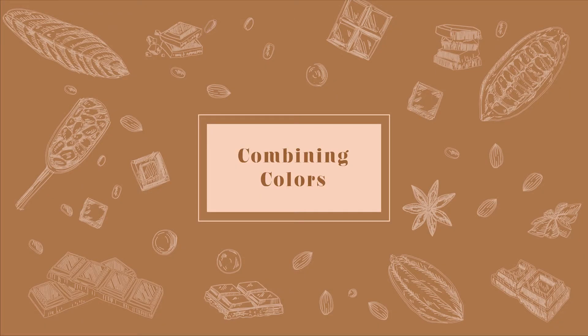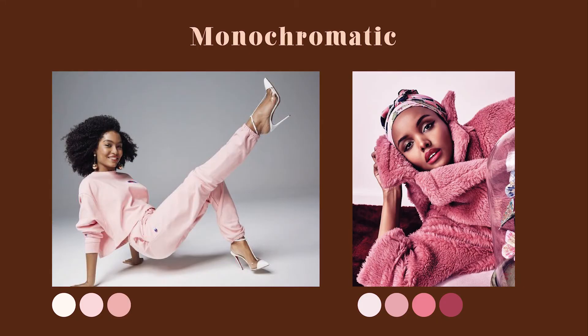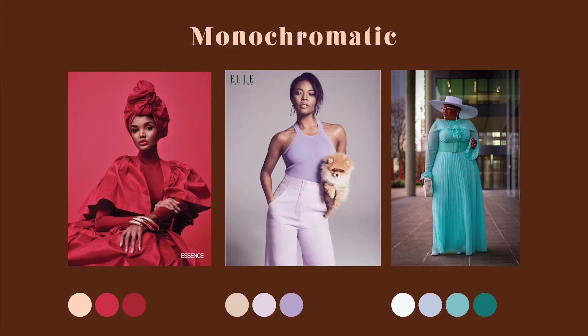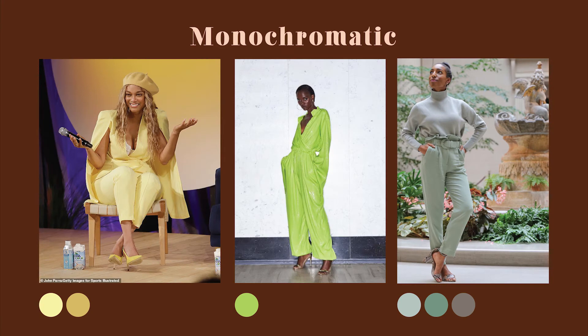Now, the exciting part of this video: how to mix and wear these colors. Monochrome — the easiest way to wear a color is to just wear a monochromatic outfit, whether they all have the same saturation and value level or if it's different. Most of the time, if it's in the same hue or the same color family, it will match. Here we have some monochromatic examples — you can wear the same color head to toe or wear different variations of that color.